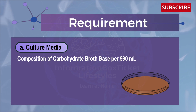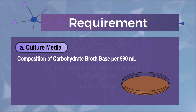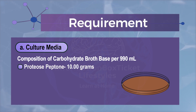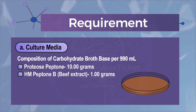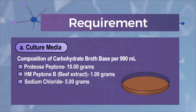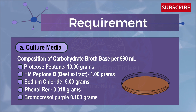If you intend to make your own carbohydrate broth base, the composition per 990 ml is: Proteose Peptone 10 g, HM Peptone B, Beef Extract 1 g, Sodium Chloride 5 g, Phenol Red 0.018 g. Alternatively, Bromocresol Purple 0.100 g can be used as the pH indicator.